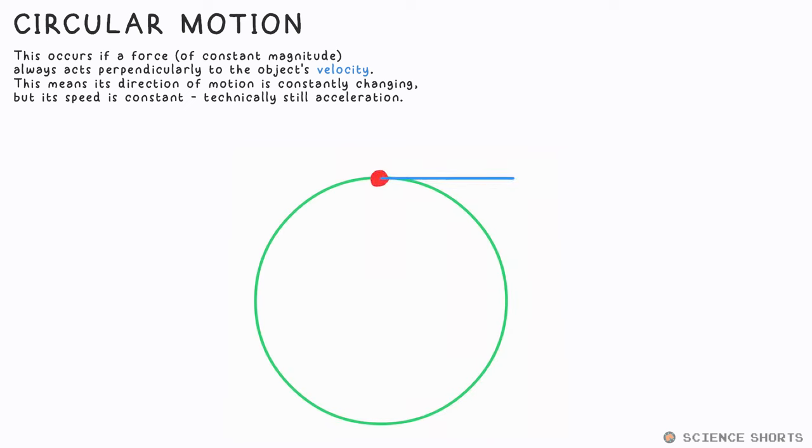For something moving in a circle, only one condition needs to be satisfied. There must be a force that continuously acts at 90 degrees to the object's velocity or direction of motion. That means its velocity and direction of travel constantly changes, but it still travels at a constant speed.